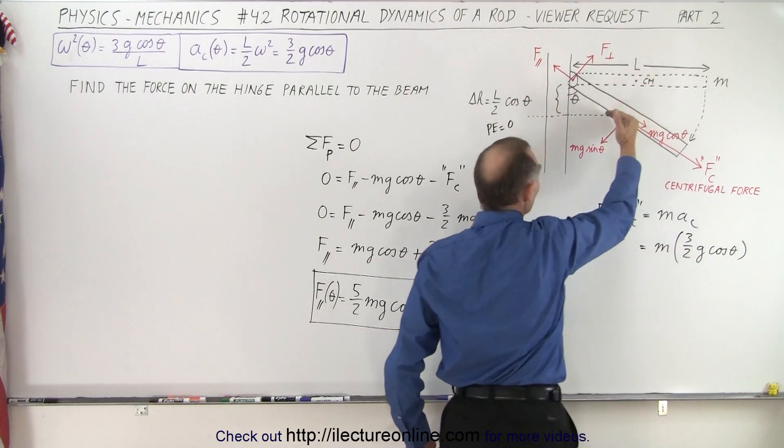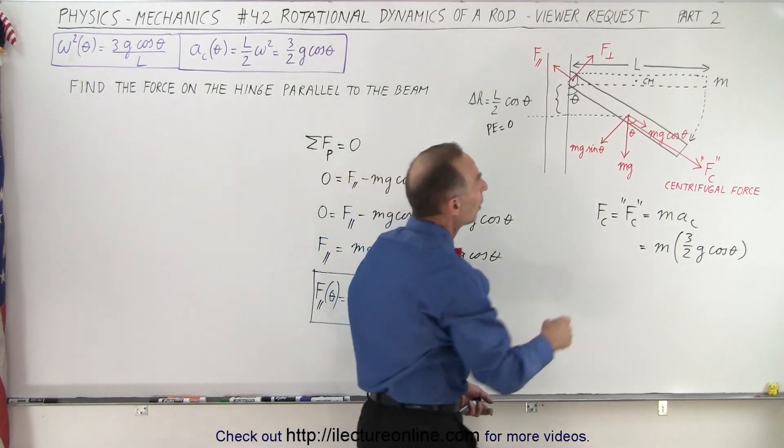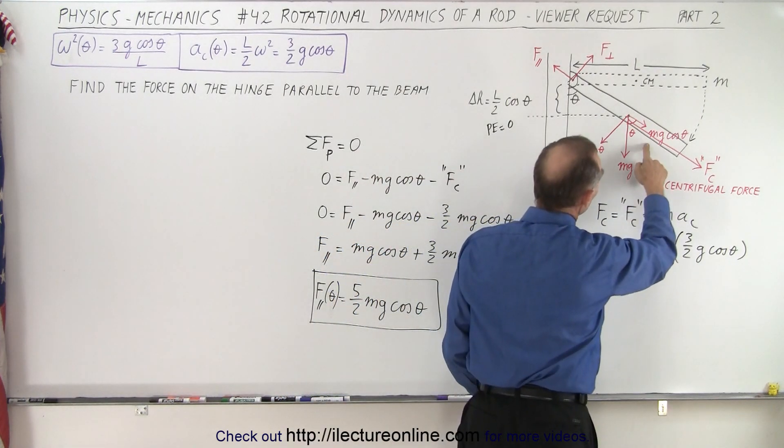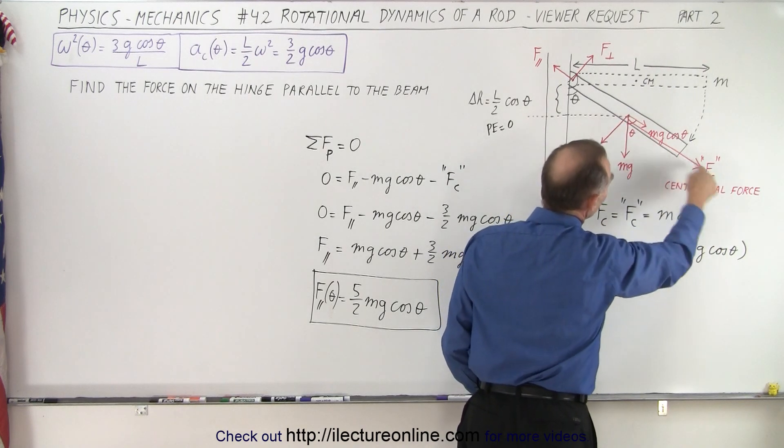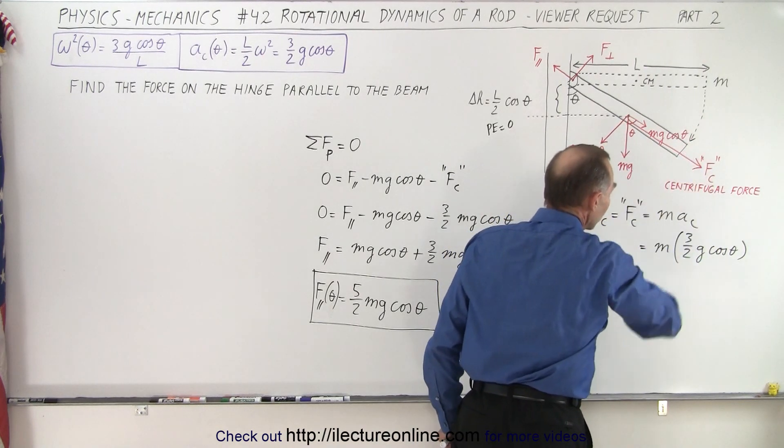As it begins to swing, and as it's beginning to pick up speed, your mg cosine theta term gets bigger as you go like this, and the centrifugal force gets bigger as you're picking up more and more speed.